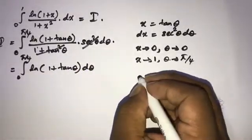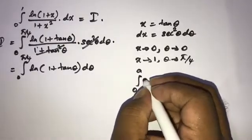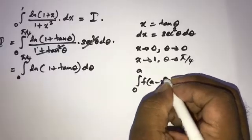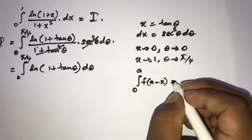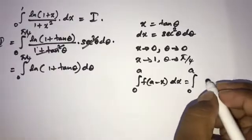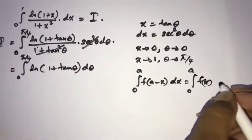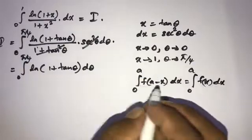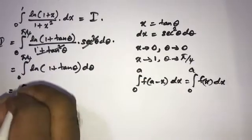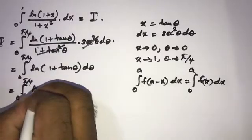Now we apply a known property of integration: the integral from zero to a of f(x) dx is equal to the integral from zero to a of f(a − x) dx. We can apply this formula to our integral.